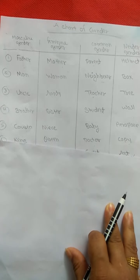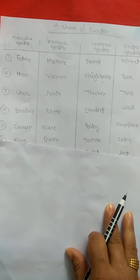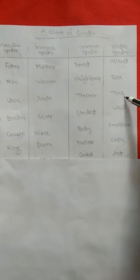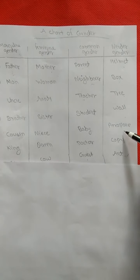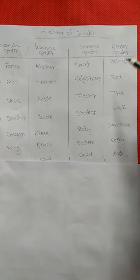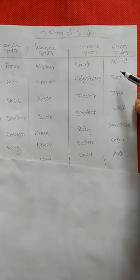Let's see what will come in neuter gender: chair, helmet, box, tree, ball, aeroplane, copy. These all come in neuter gender.